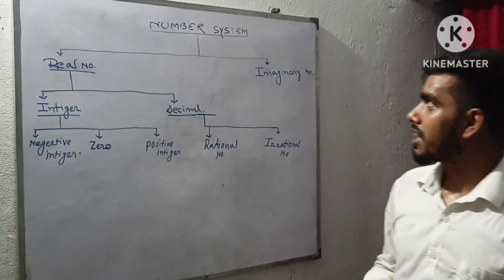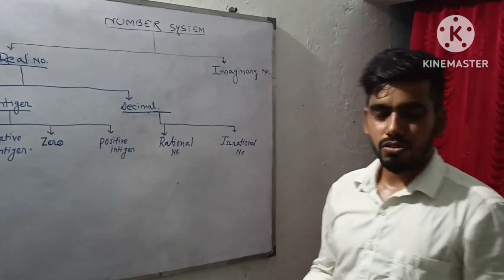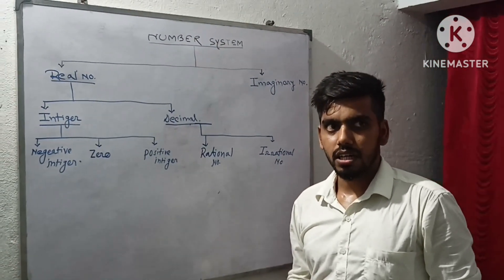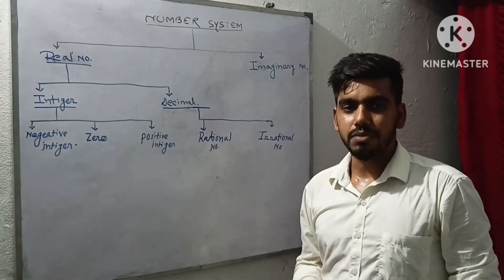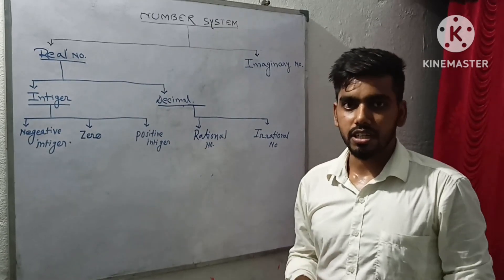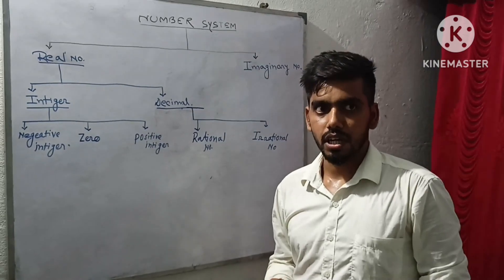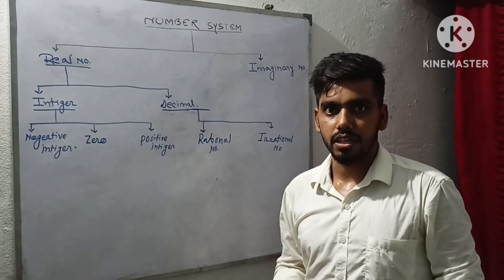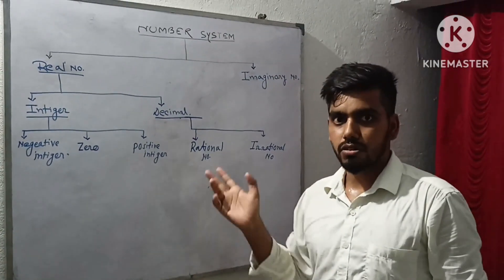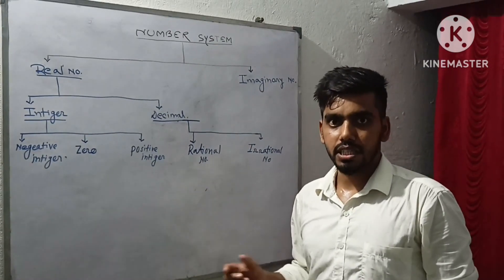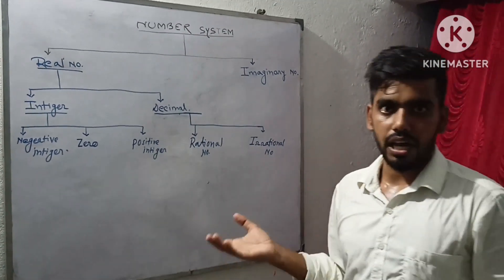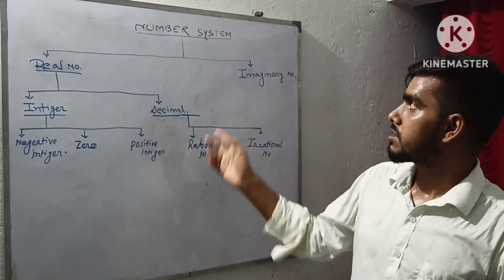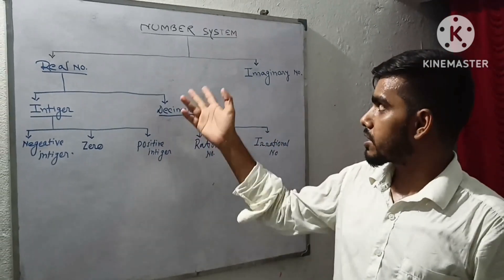Today I will explain about the number system. First, what is a number? Just like our body's smallest structural and functional unit is the cell, and in an element the atom is the smallest particle, all mathematical calculation is based on number. So number is the basic unit of mathematics. By the help of numbers we can perform addition, multiplication, subtraction, division, and so on.